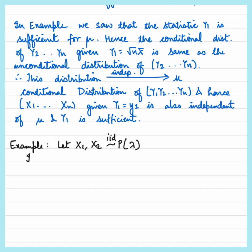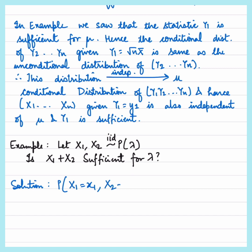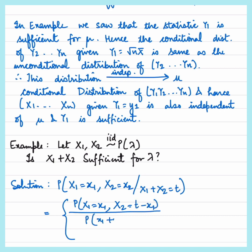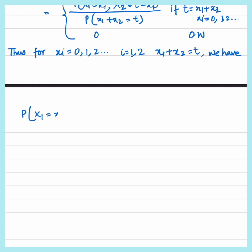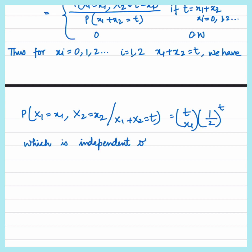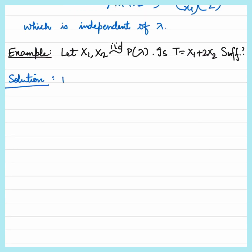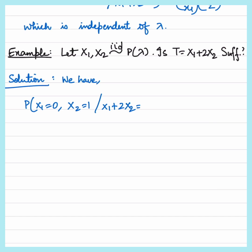Let's consider an interesting example. Suppose x1 and x2 belong to a Poisson distribution with parameter lambda. We have to check whether x1 + x2 is sufficient for lambda or not. We compute the probability P(X1 = x1, X2 = x2 | X1 + X2 = t). Solving this, the conditional probability comes out to be independent of lambda. Hence x1 + x2 is a sufficient estimator for lambda.